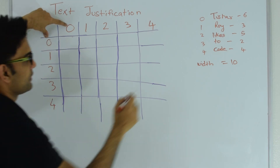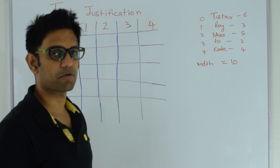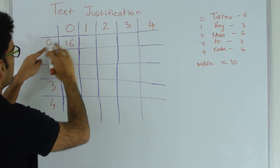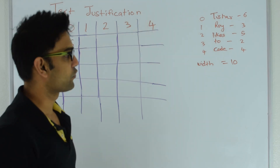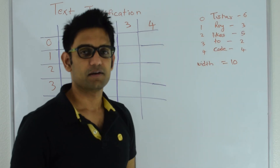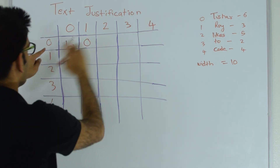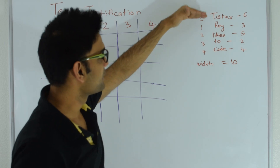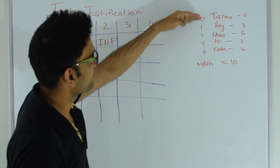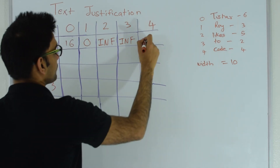For cell (0,0): what is the cost of storing the string at index 0 alone on one line? 'Tushar' is 6 characters, leaving 4 empty spaces, so cost = 4² = 16. For (0,1): storing indices 0 and 1 on one line — 'Tushar' takes 6 spaces, 1 space between them, 'Roy' takes 3 spaces, totaling 10 — so 0 empty spaces, cost = 0. For (0,2), (0,3), and (0,4): you cannot fit all those words on one line, so those values are infinity.